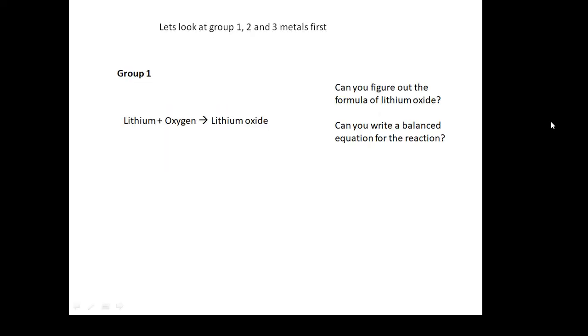Let's look at the metals first groups one, two, and three. Let's look at group one. So lithium plus oxygen goes to lithium oxide. Can you figure out the formula for lithium oxide? Can you write a balanced equation for the reaction? Well, hopefully that's what we're going to learn how to do.